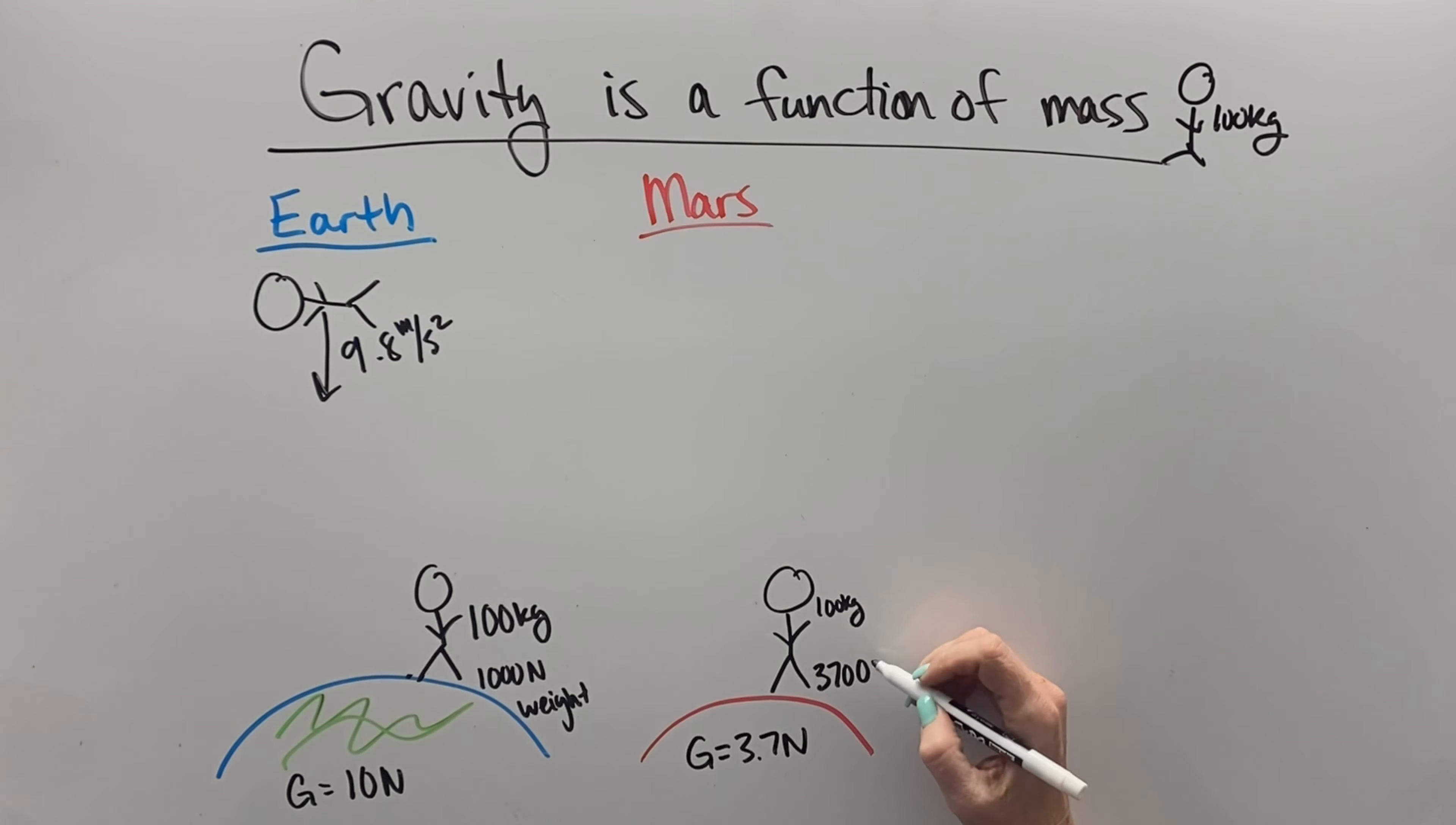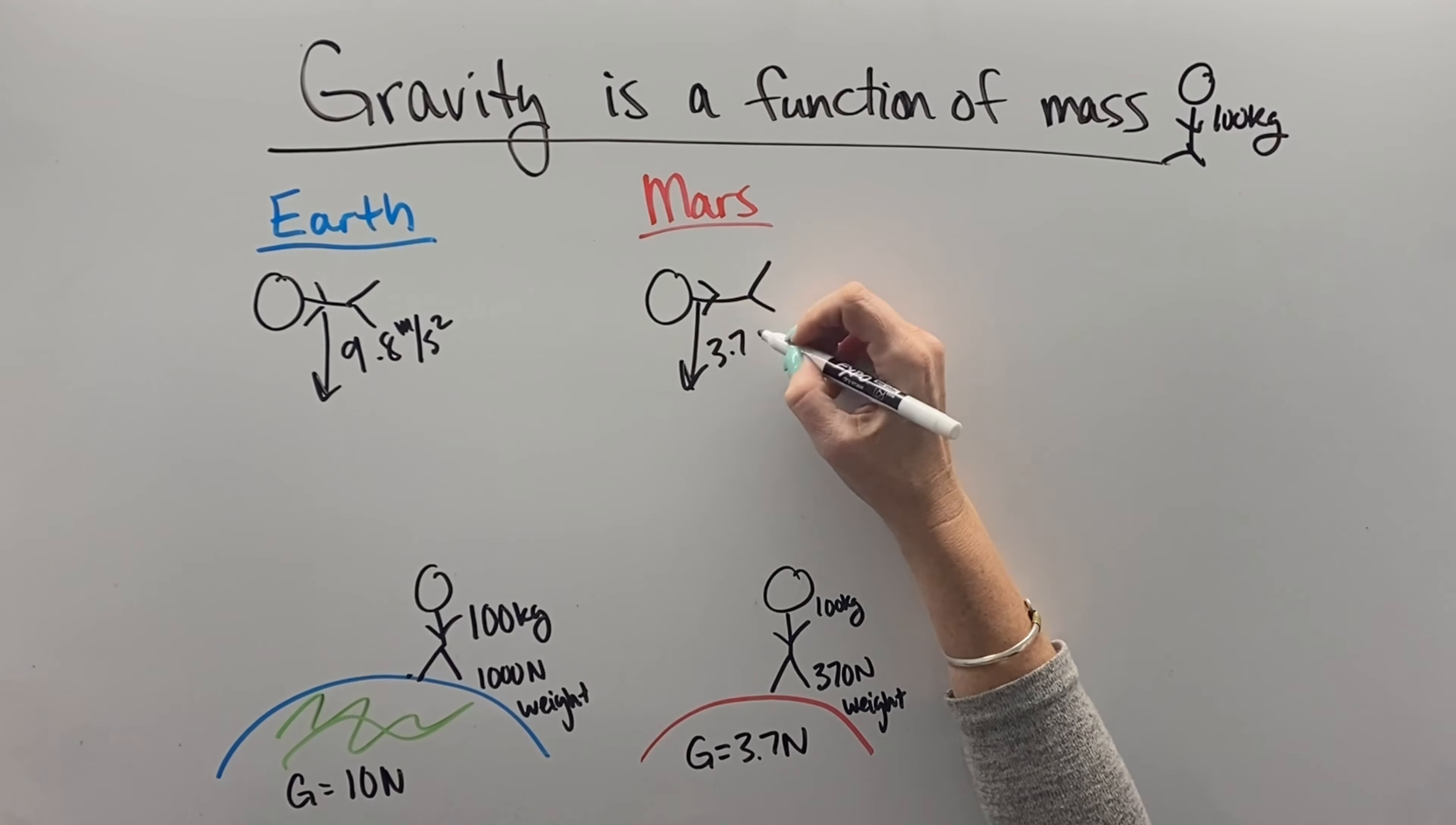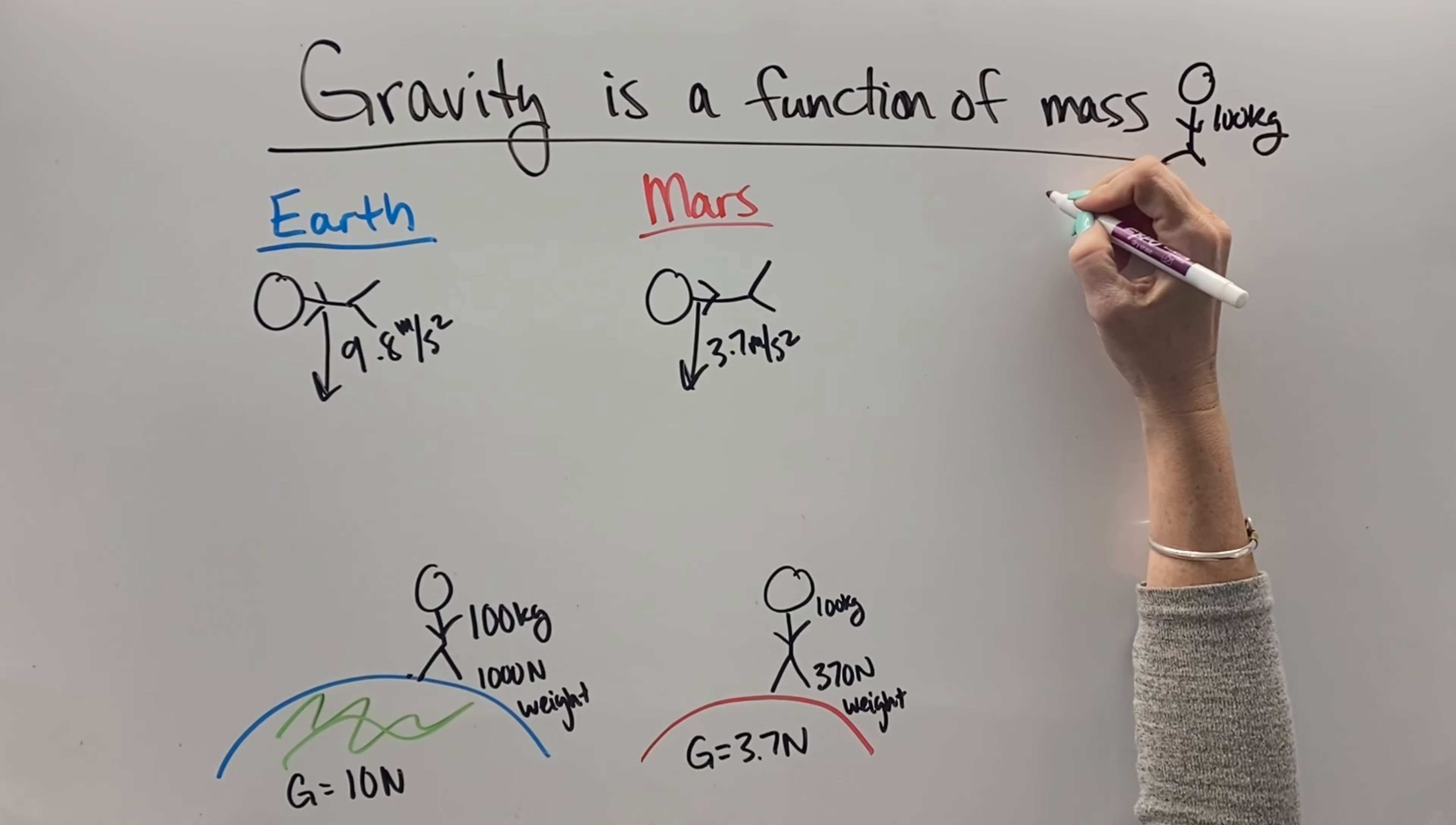...is going to go to Mars and weigh 370 newtons, one-third what we weigh on planet Earth. And if a person were to fall on Mars, they would fall with an acceleration of 3.7 meters per second squared. They would fall a third as fast as well. They would accelerate more slowly on Mars.